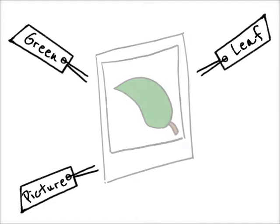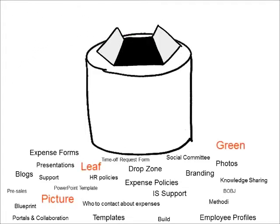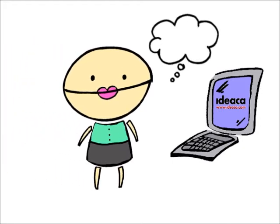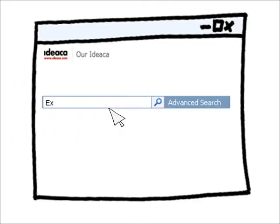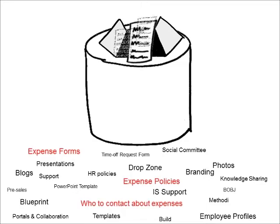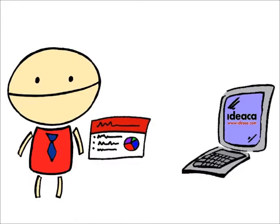So that means when Jennifer goes to search for information regarding expenses and she uses the search term 'expense,' everything tagged with that data will show up, including expense forms, expense policies, and who to contact with questions about expenses.